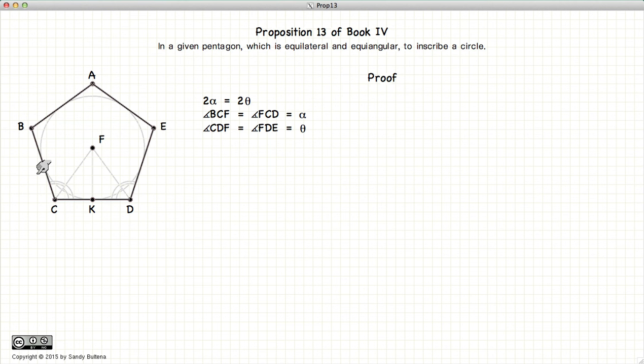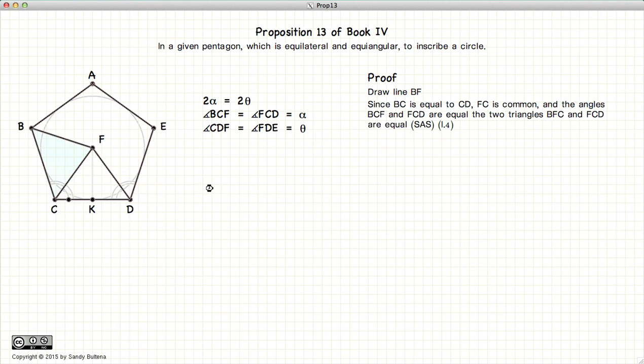So how do we prove this? First, we draw the line BF, and now we look at the two triangles. These two triangles have a common side, an angle that's equal in both of them, and since the pentagon is equilateral, BC is equal to CD. So we have side, angle, side.